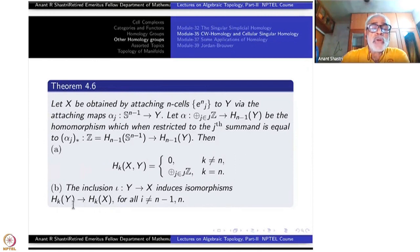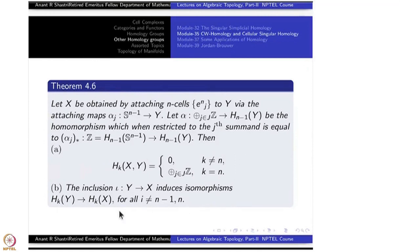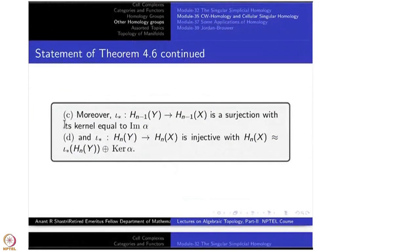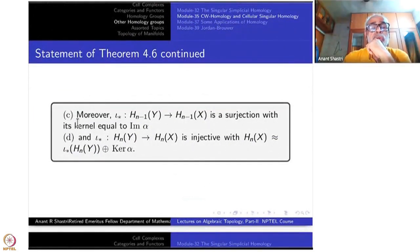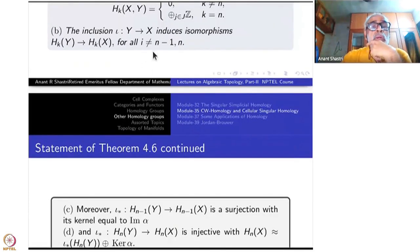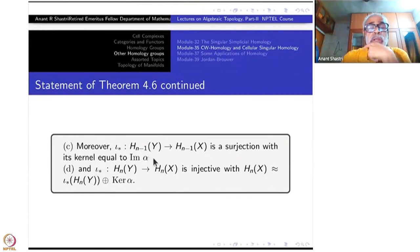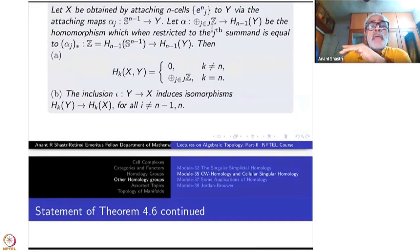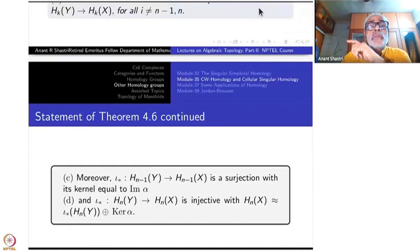Inclusion in homomorphism is an isomorphism for all K not equal to N and N minus 1. Statement C: i_* from H_{N-1}(Y) to H_{N-1}(X) is a surjection, and its kernel is precisely equal to the image of alpha.